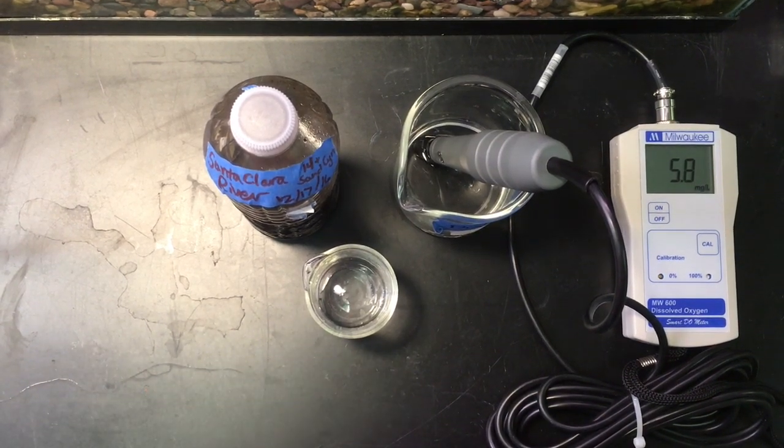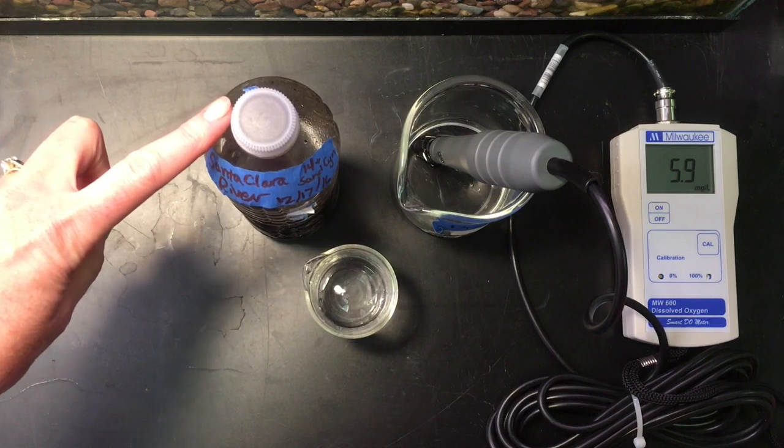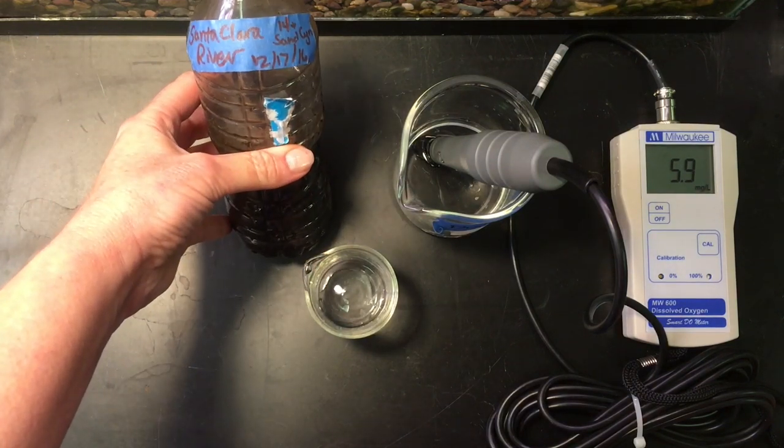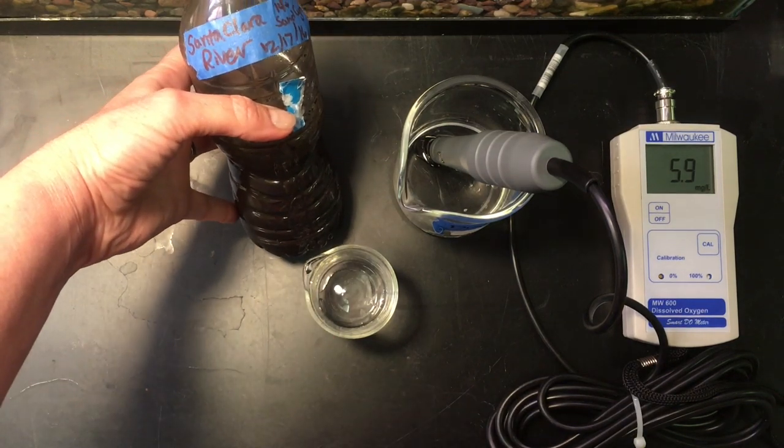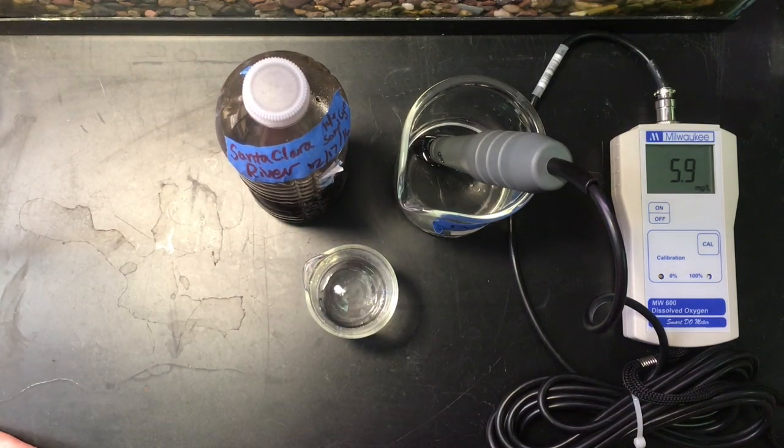I'm going to show an example of a sample of water that has extremely low dissolved oxygen. So this was taken from the Santa Clara River in December of 2016 and it's full of debris. And so this sample actually came from river water that had run through a watershed that had burned the previous summer.